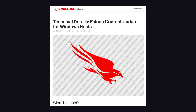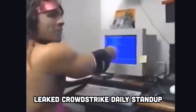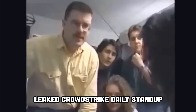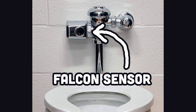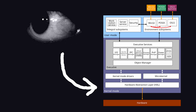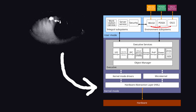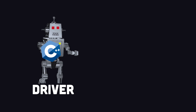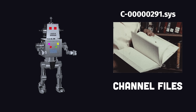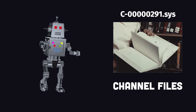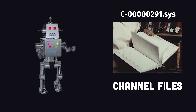CrowdStrike released an official statement explaining what happened. The CrowdStrike Falcon sensor is software that sits in the background on your machine, looking for potential security anomalies. It contains a driver, which is the thing that actually executes code, along with a bunch of channel files, which are basically just config files that contain rules about new potential attacks that the sensor can look for.